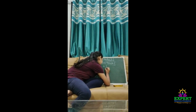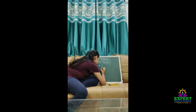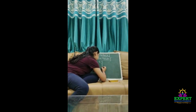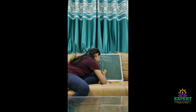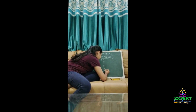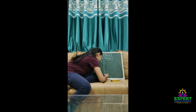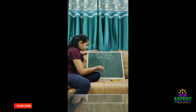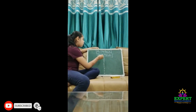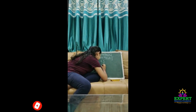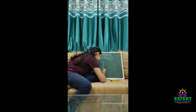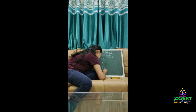Then we have to write here 8, 7, 6, 5, 4, 3, 2, 1. And on the down side we have to write 0, 1, 2, 3, 4, 5, 6, 7, 8 and 9.